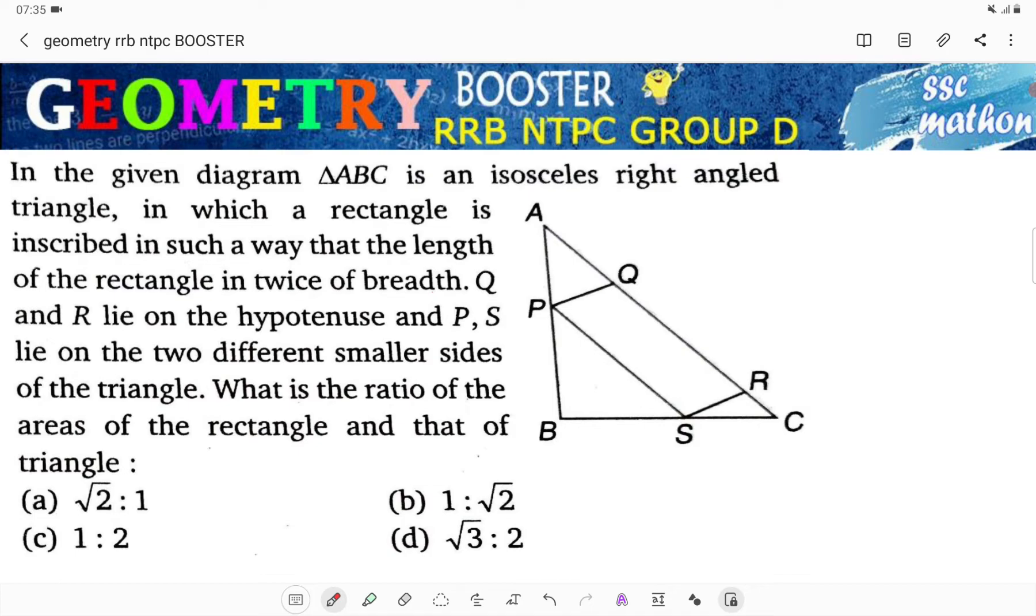Q and R lie on the hypotenuse, P and S lie on two different smaller sides of the triangle. What is the ratio of the areas of the rectangle to that of the triangle?